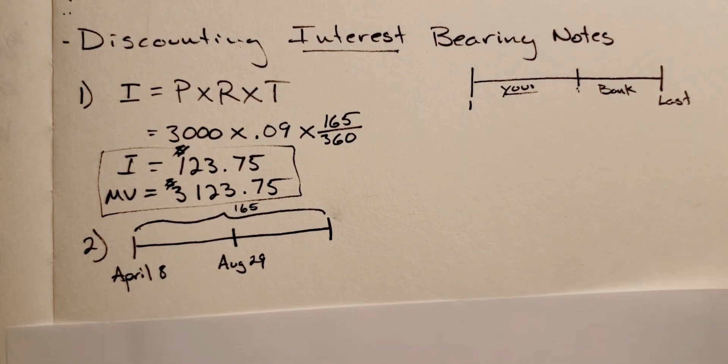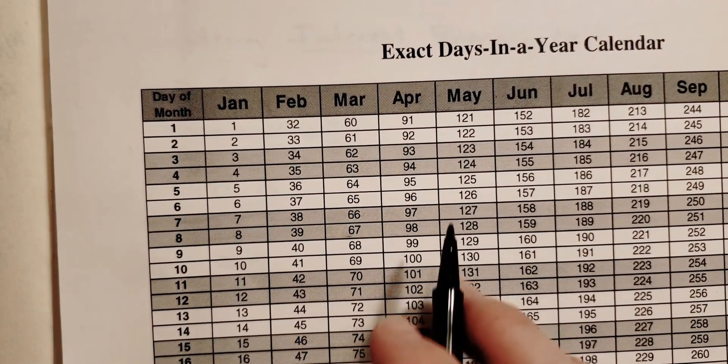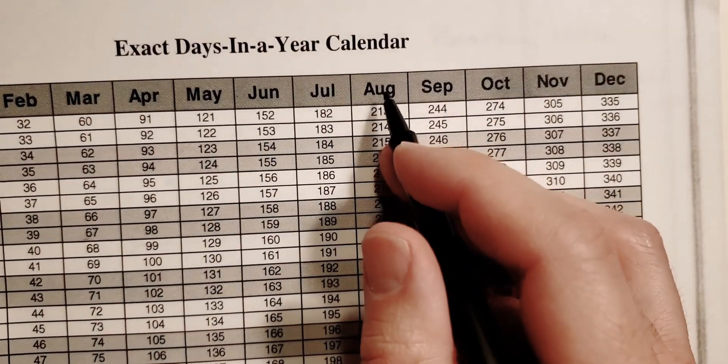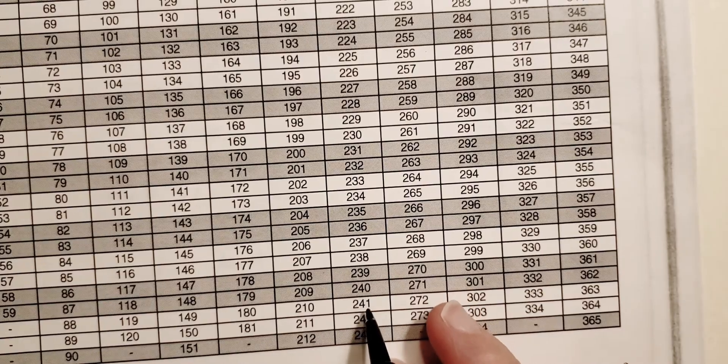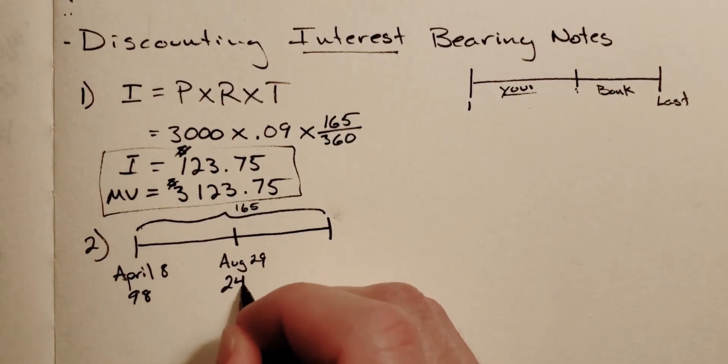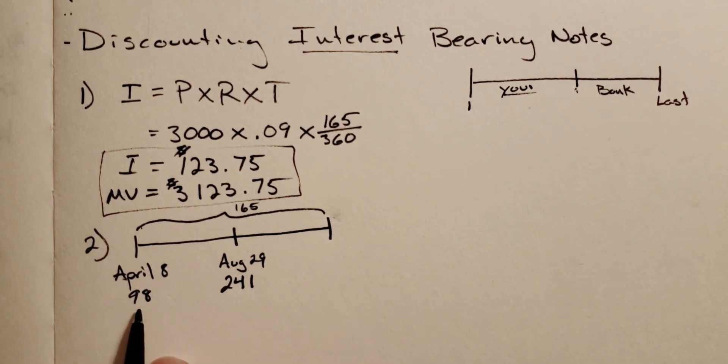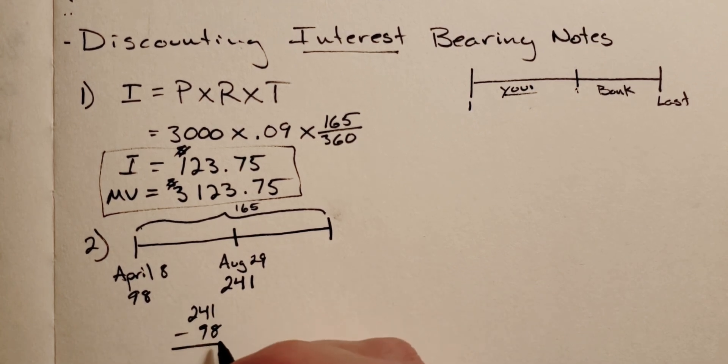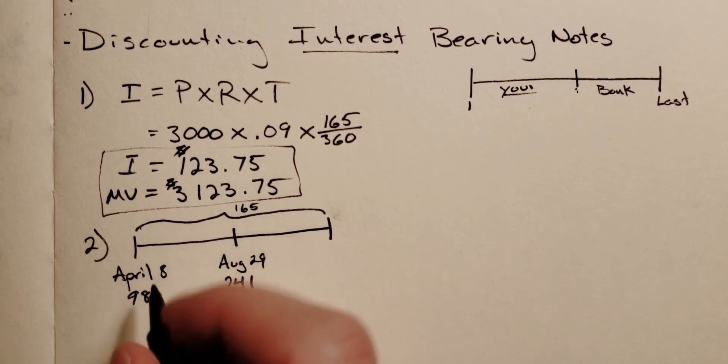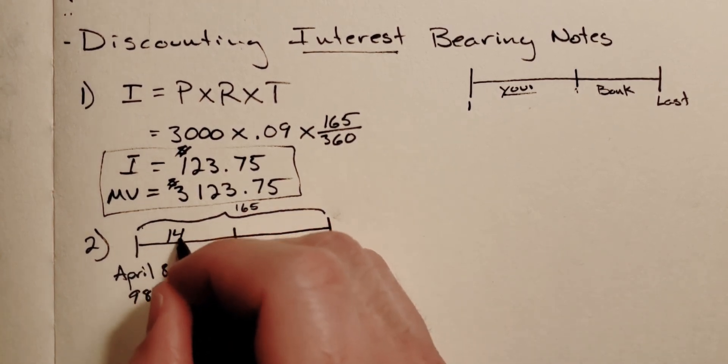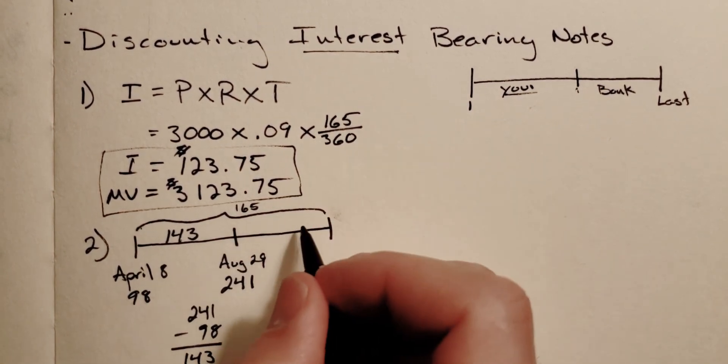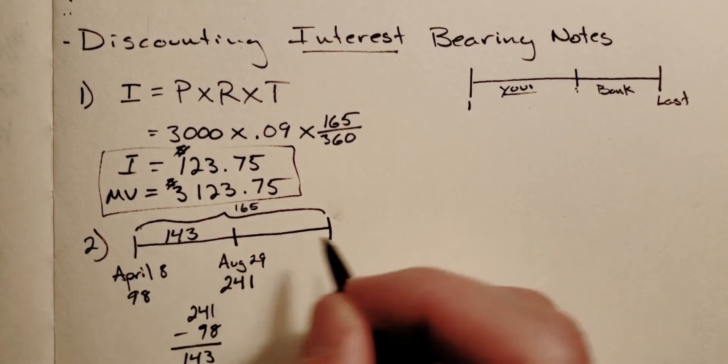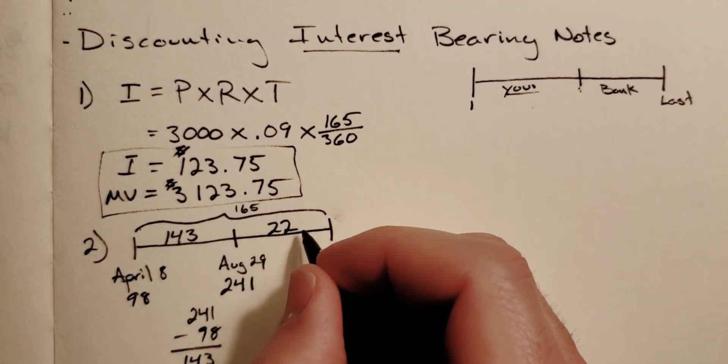April 8th is day 98. August 29th is day 241. And so if we just subtract 241 minus 98, we end up with 143. Now that 143 is not how long the bank held it, that's how long we held it. That's our distance between these two dates. What we can then do is say, well, 165 is total, minus 143, and that gives us 22 days left that the bank will hold the note for.